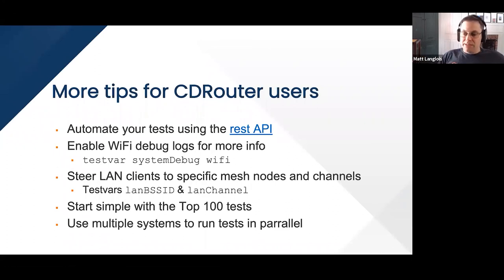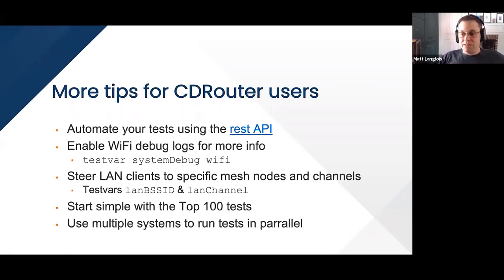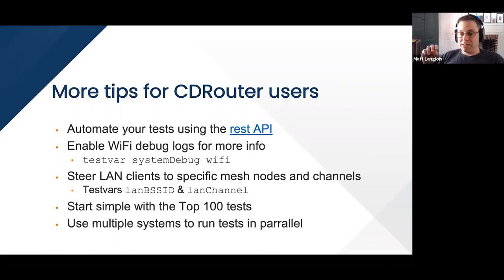Key to all of this testing is automation — you need to automate all of this testing. That's the only way to scale up and deal with the volume of testing you should be doing. CDRouter has a REST API built in, and the documentation is on the support site. Once you've developed your baseline functional tests, done some performance testing and stability testing, you can automate all of that within CDRouter using the REST API. Start simple, get those baseline tests up and running, do performance tests, functional tests, and stability tests, and then automate. From there, scale up and start looking at other protocols and more comprehensive test strategies.